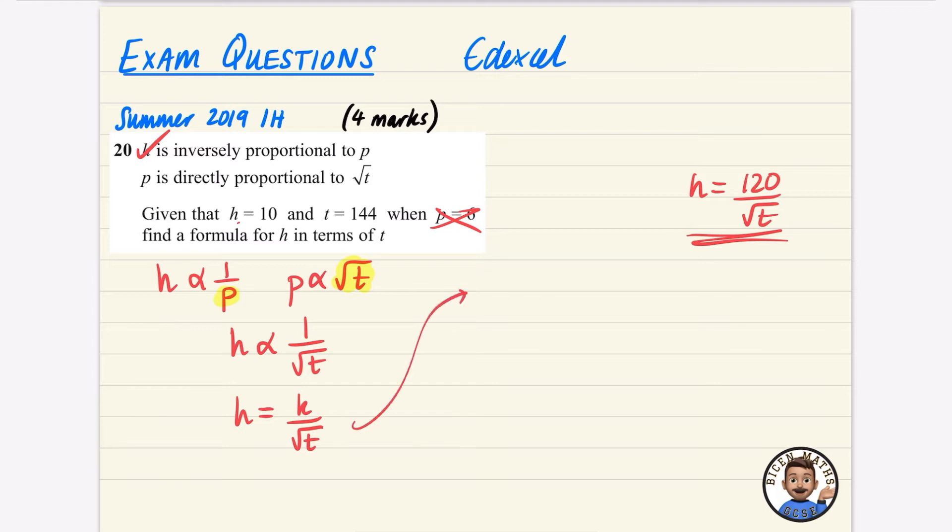So that means that when H is equal to 10, I'm going to find out what K is. T is 144. So that's going to be 10 equals K over 12. And 10 times 12 is 120. So K is 120.